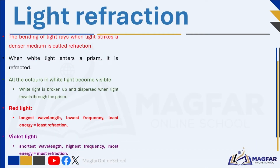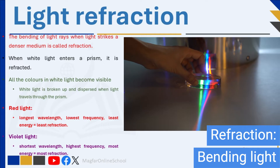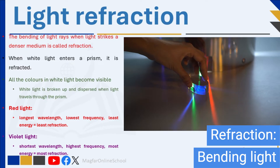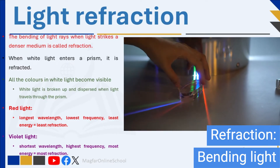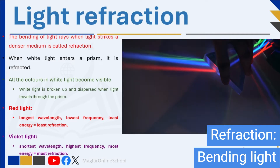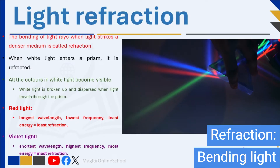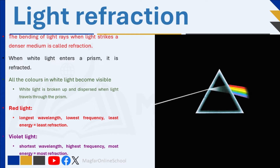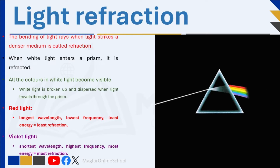Light can change direction when it moves from one medium to another, such as from air to glass. We call this bending of light refraction. However, the different colors of light that make up white light refract at different angles, which is why it is possible to see different colors. To see how light refracts, we use a triangular prism — a three-dimensional shape made of clear perspex or glass. This triangular prism is denser than air.